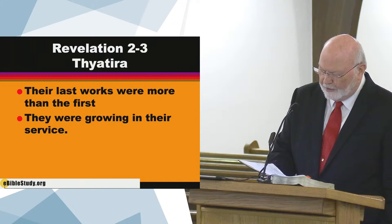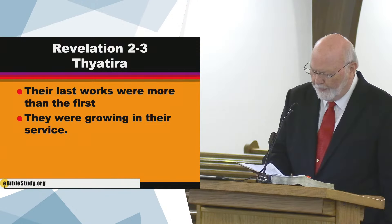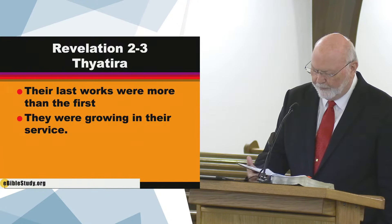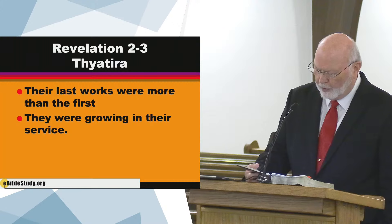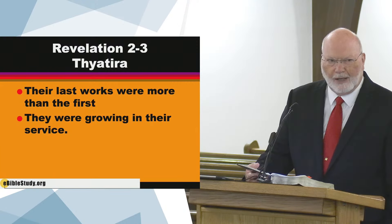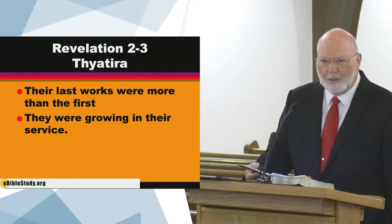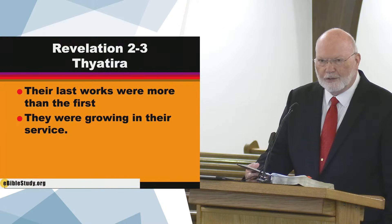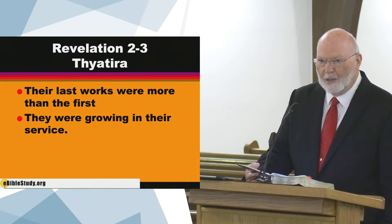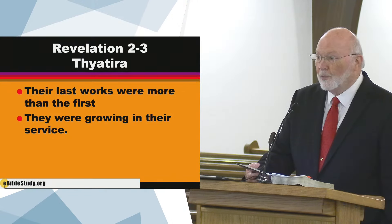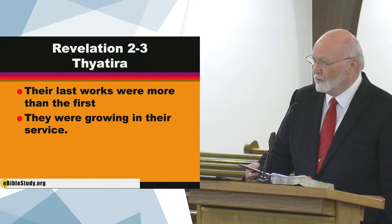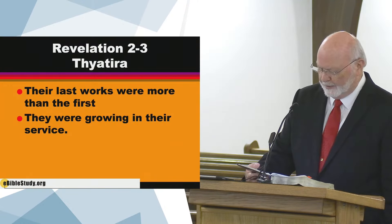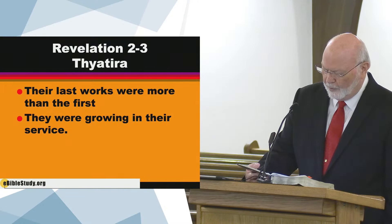Verse 13, continuing: 'clothed in a robe reaching to the feet, and girded across his chest with a golden sash.' What does that sound like? You go back to Exodus 28, where we read about the clothing to be made for the priests. Jesus is, of course, our high priest. So we're seeing someone like the son of man, and he's also priestly with a golden sash.